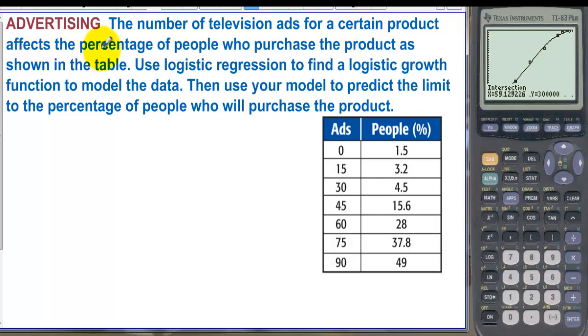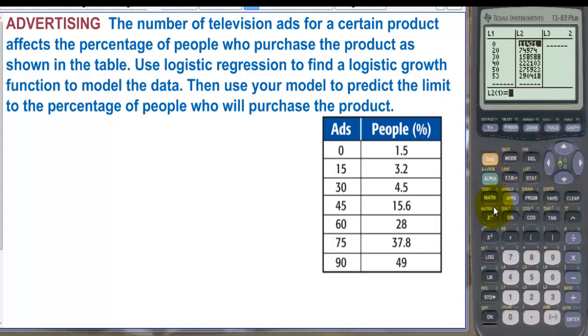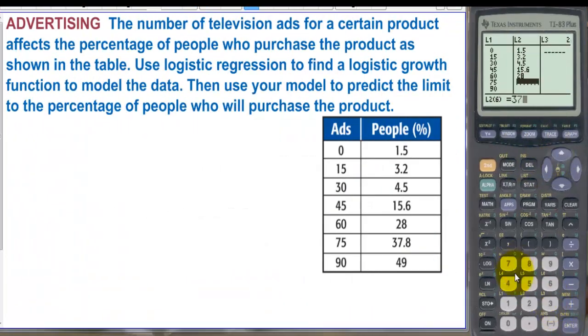The number of television ads for a certain product affects the percentage of people who purchase the product as shown in the table. Use logistic regression to find a logistic growth function to model the data then use your model to predict the limit to the percentage of people who will purchase the product. Well let's go to stat and we're going to edit we can clear these out actually we want to delete these out let's press enter and delete all of these out 37.8 and then 49.